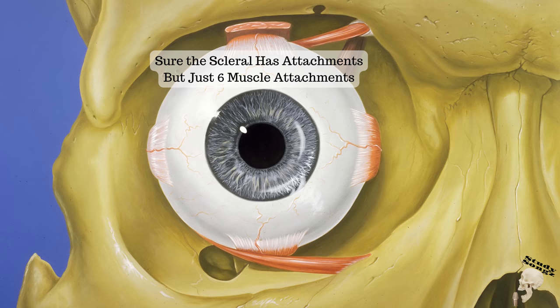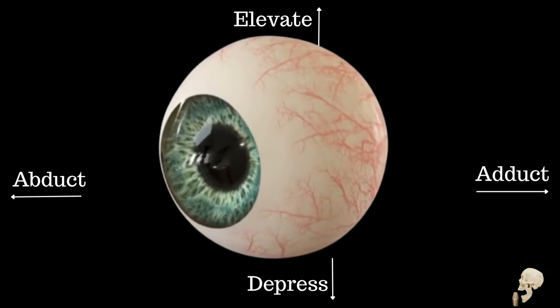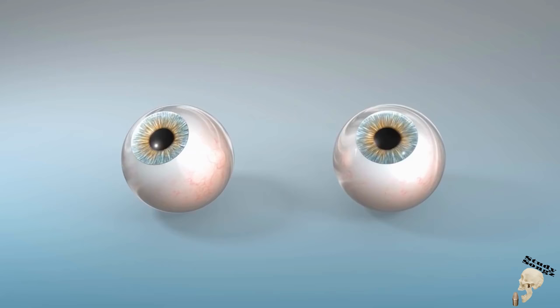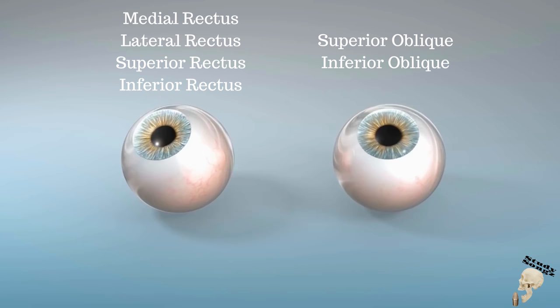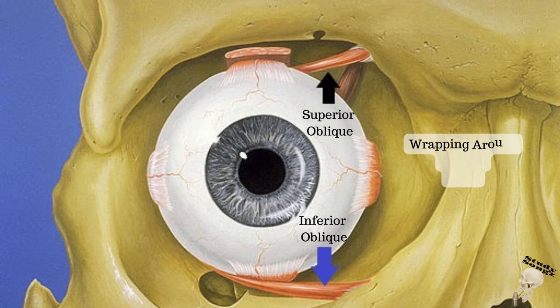Sure the sclera has attachments, but just six muscle attachments. I love the eye muscle anatomy. Adduct, adduct, elevate, depress — four movements for the four rectus, two torsions for the two obliques, six muscles for the eyes moving. Medial rectus, lateral rectus, superior rectus, superior oblique, inferior oblique. Four rectus to the two obliques — superior and inferior oblique, wrapping around, looks so sleek. Up and down and rotating — torsion type are rotating.